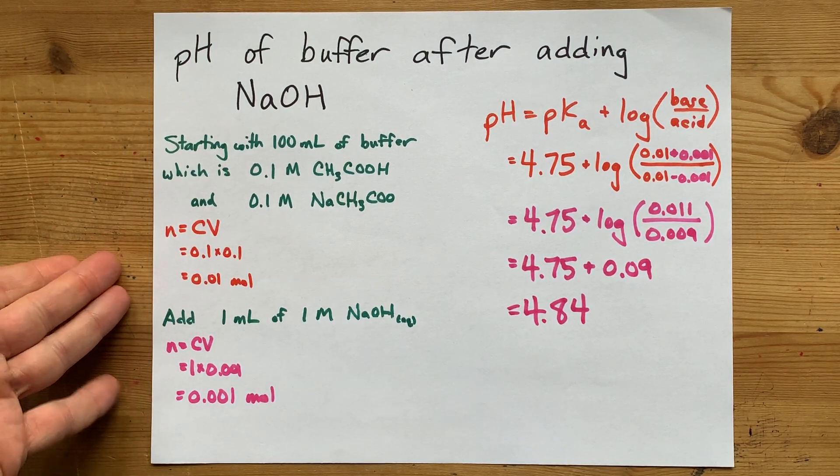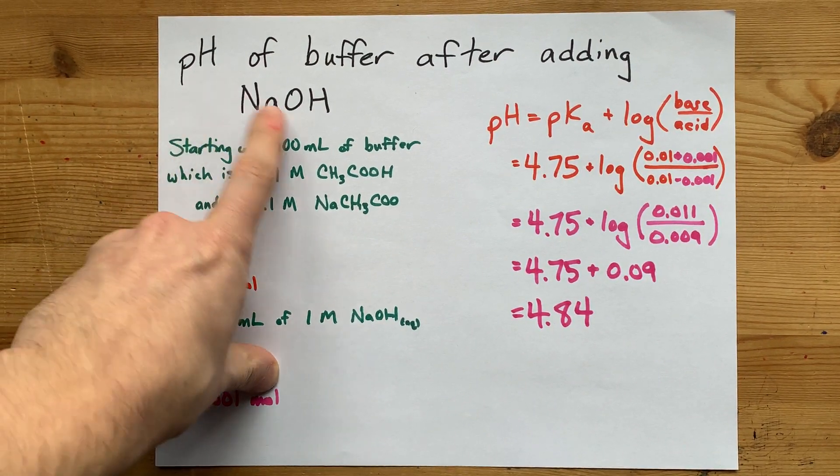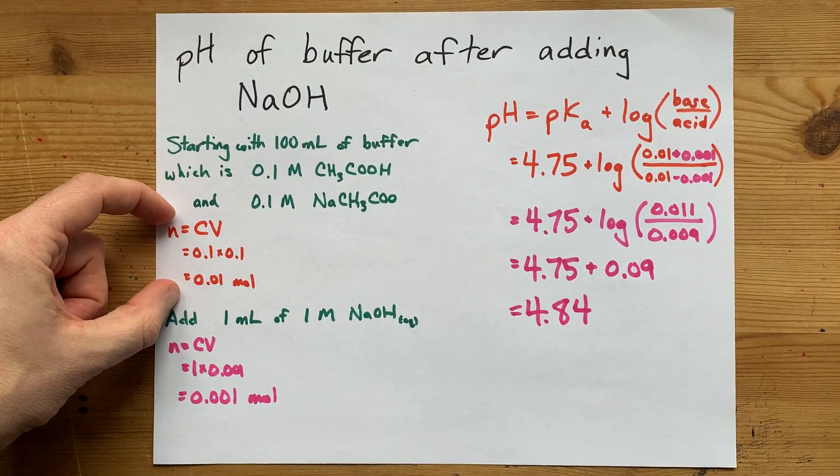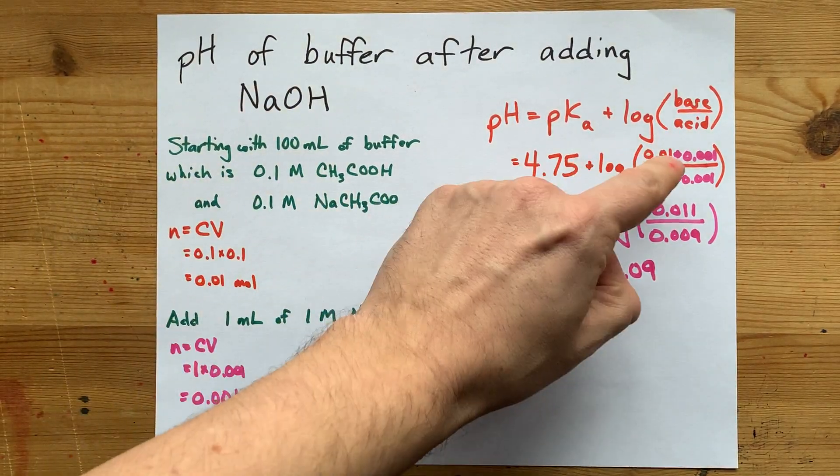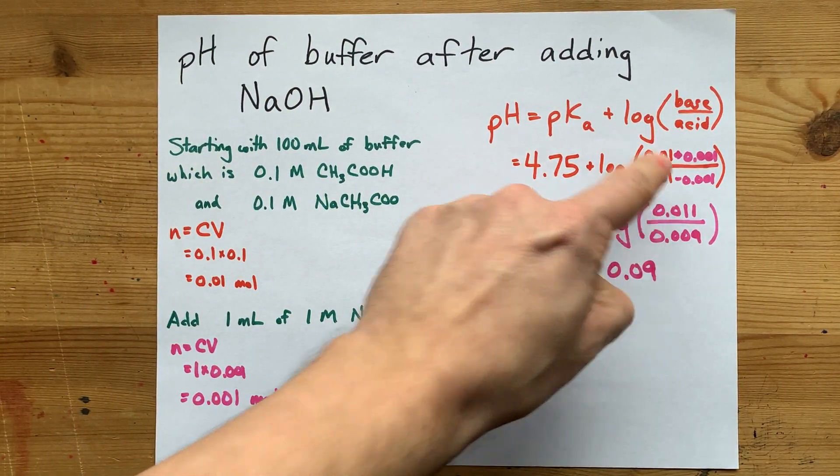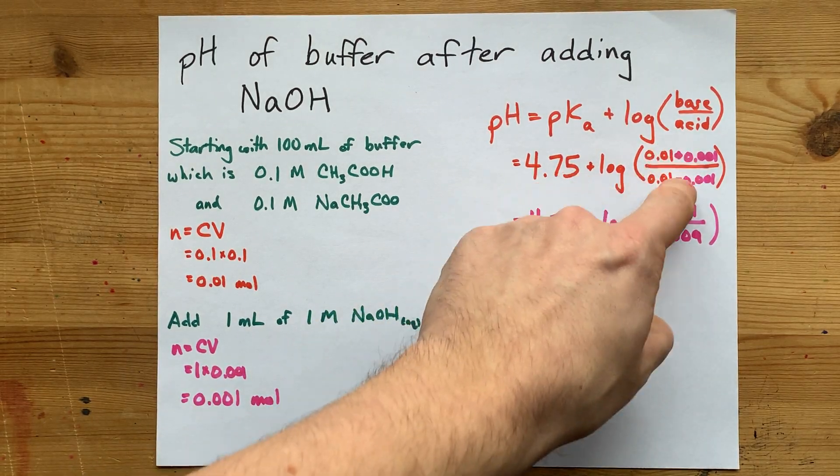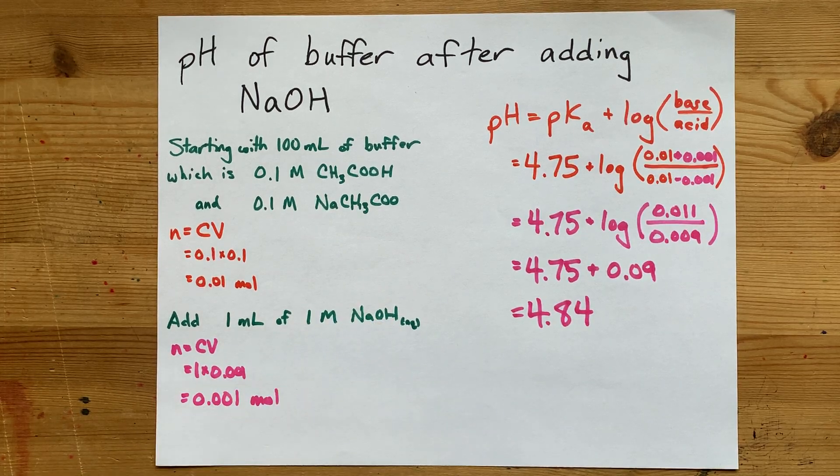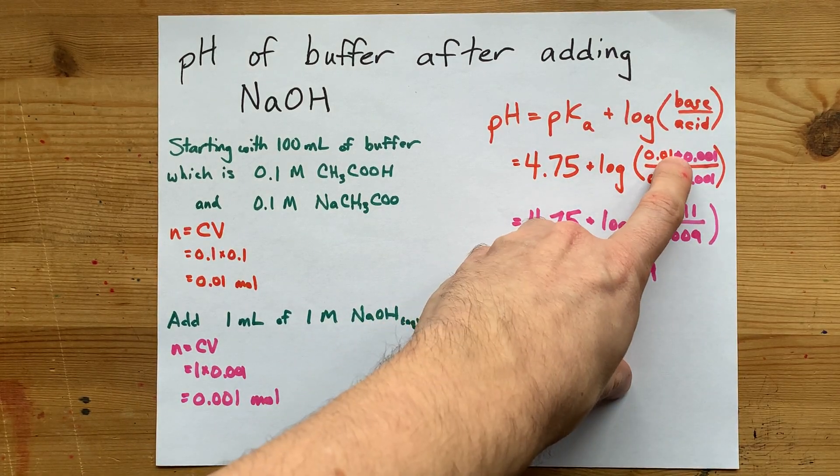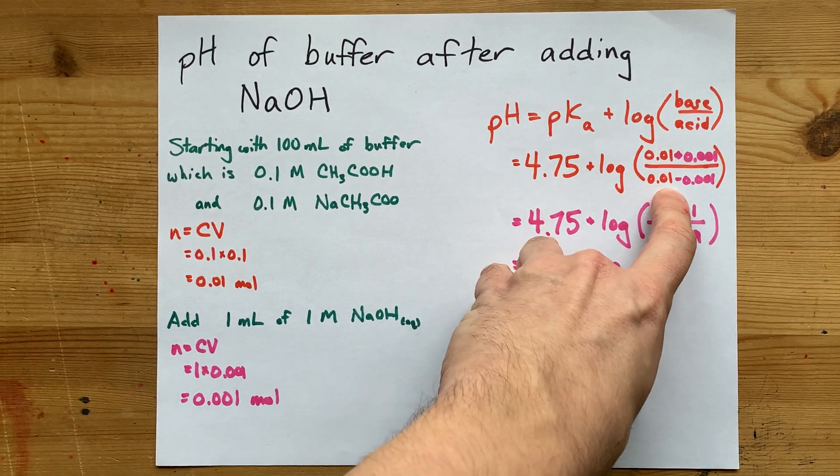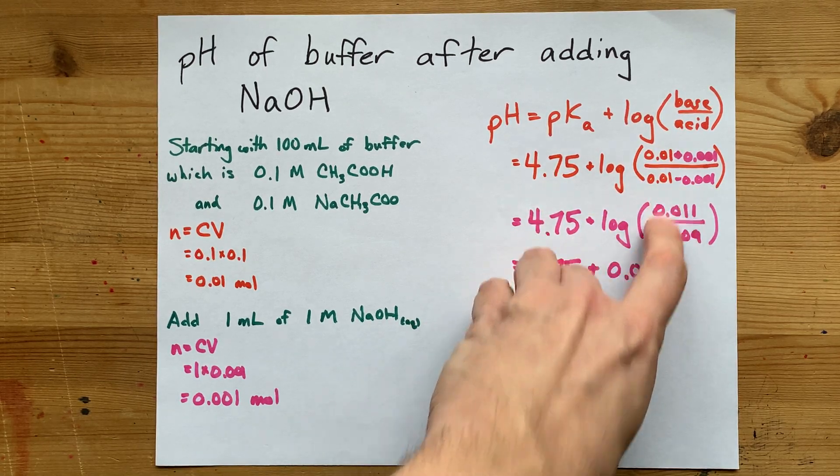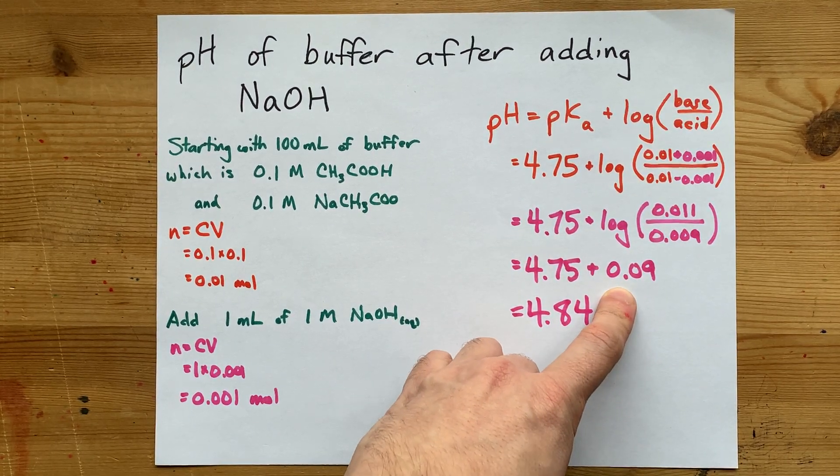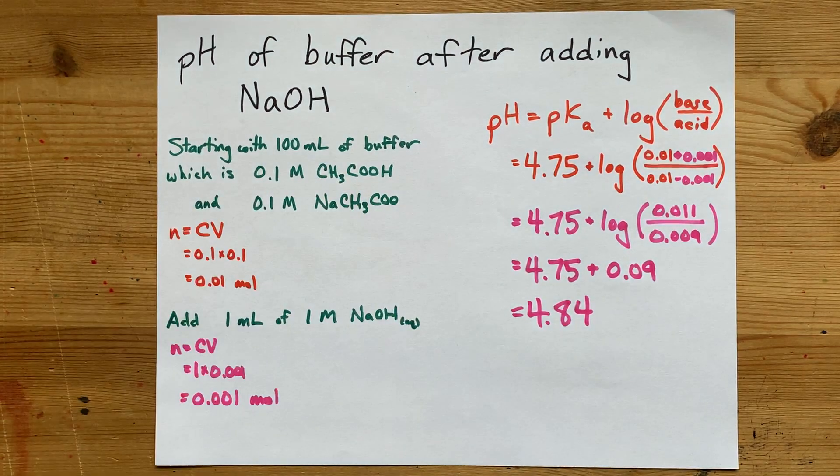The moral of the story here is that to calculate a new pH after you add a strong base, you're going to need to know the numbers of moles of your weak acid and conjugate base that you started with. Then you're going to need to perturb those amounts by adding and subtracting the number of moles of strong base that you added. Don't forget you're going to add on to the base number and you're going to take away from the acid number. That should leave you with a positive number after you log it in the Henderson-Hasselbalch equation. And your pH should have risen just a little bit.